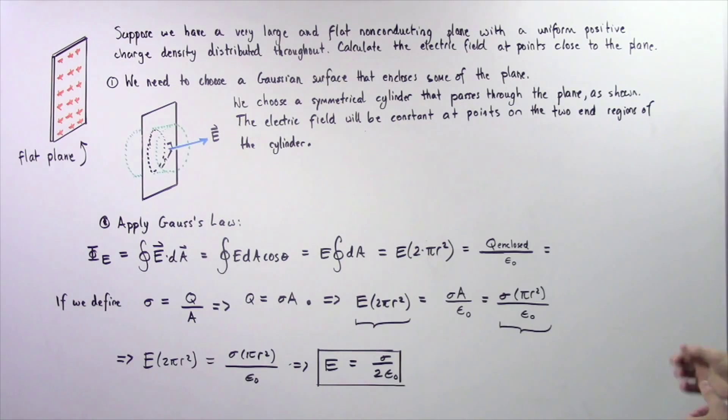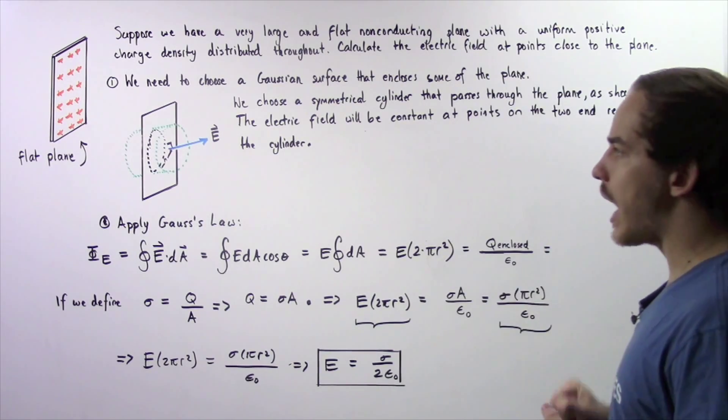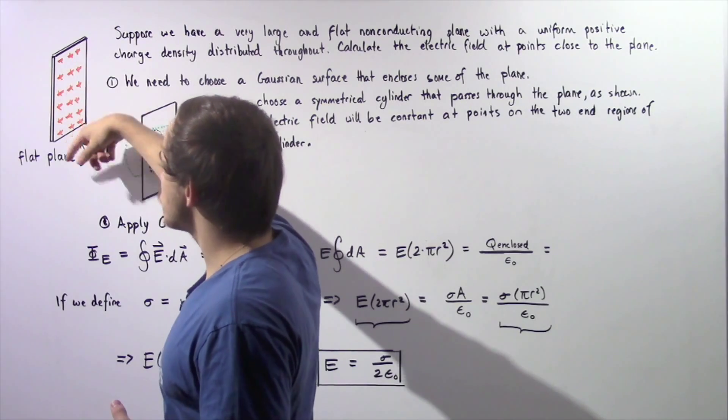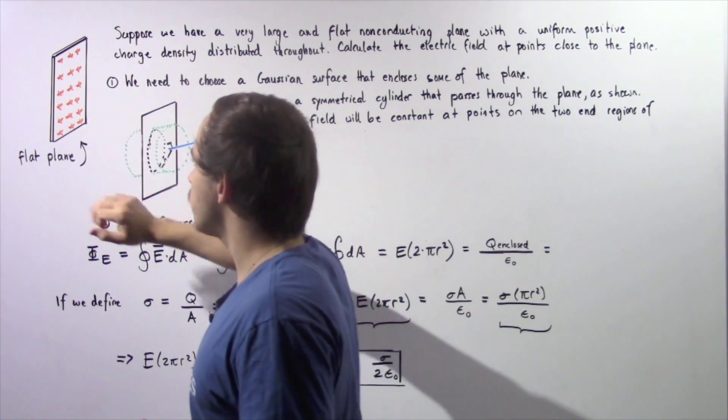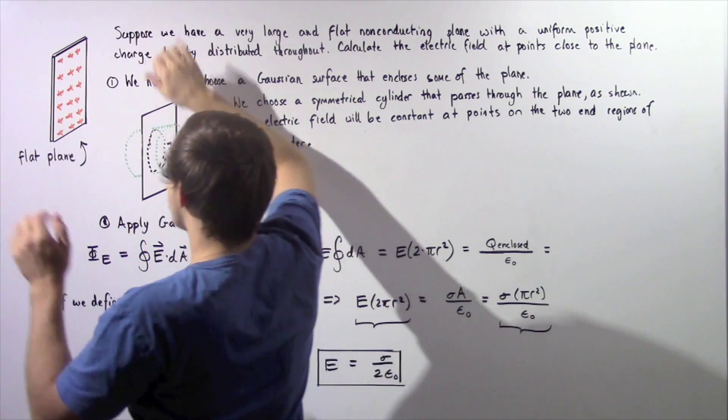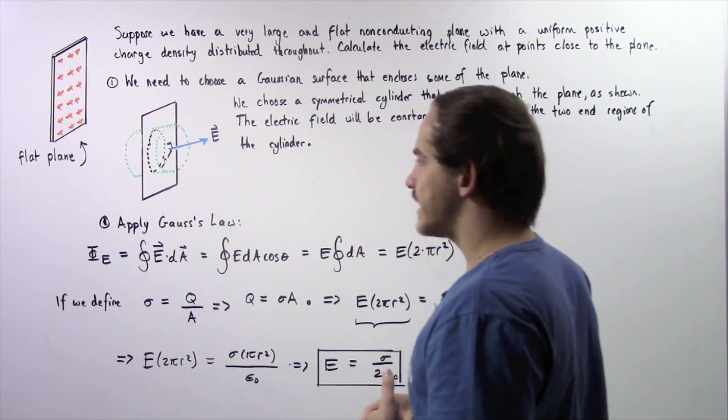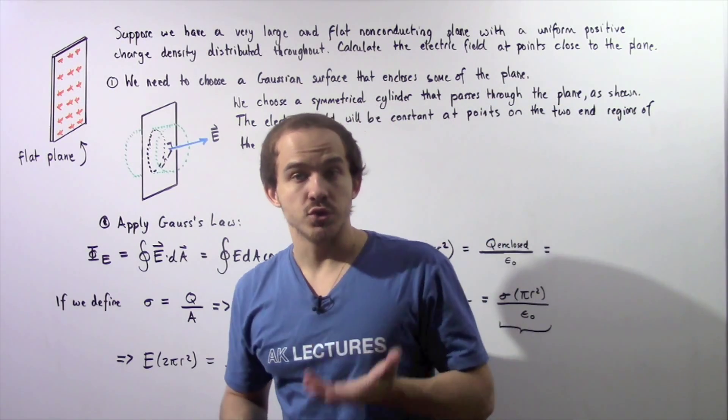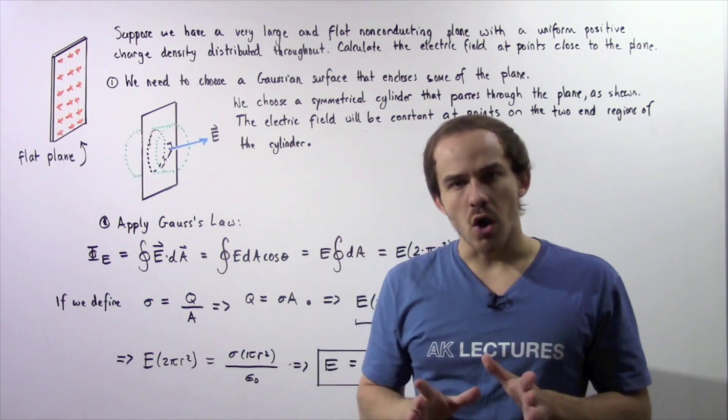Calculate the electric field at a point close to our flat plane. We have the following positive charge which is distributed uniformly throughout the flat plane which extends in all four directions. We want to calculate the electric field close to our flat plane and we're going to use Gauss's law.